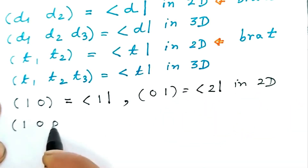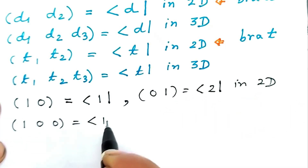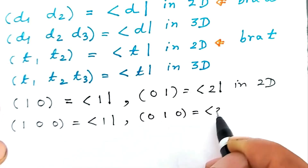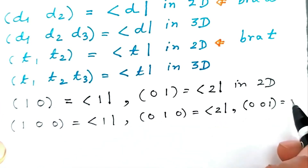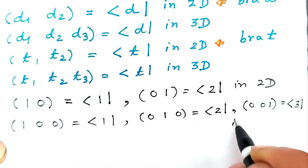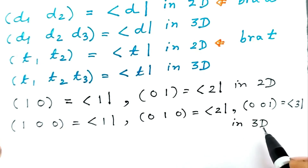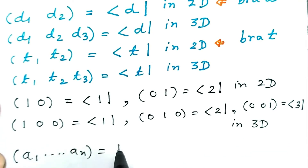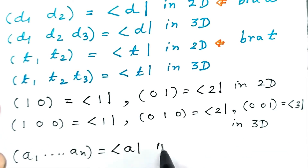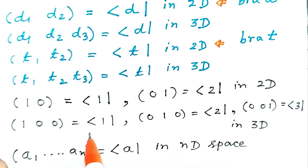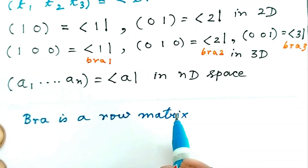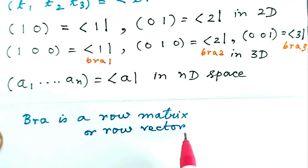Similarly, (1, 0, 0) is Bra 1, (0, 1, 0) is Bra 2, and (0, 0, 1) is Bra 3 in 3D. The row matrix (A1, A2, …, AN) is represented by Bra A in N-dimensional space. We note that Bra is a row matrix or row vector.